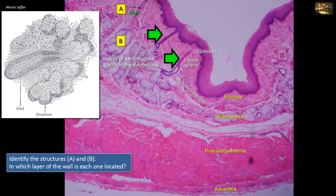The ducts open on the surface of the mucosa. The duct lining does not secrete but is only a structural epithelium that transports the secretion of the acini present in the submucosa. Higher magnification would show the ducts lined by a simple cuboidal epithelium.